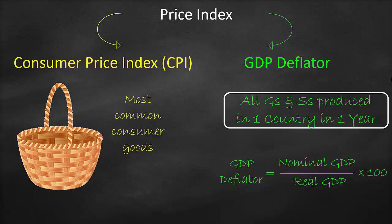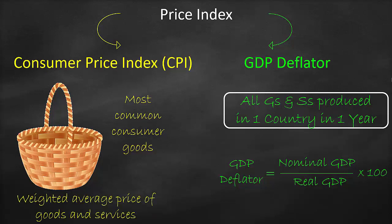For example, if we have Pepsi and Coke, and the majority prefer Coke, then in this basket we put Coke and not Pepsi. Similarly, for smartphones — iPhone or Samsung — if the majority prefer iPhone over Samsung, we put iPhone in the basket and not Samsung, because we include the most common consumer goods. At the end, we calculate the weighted average price for these most common consumer goods.